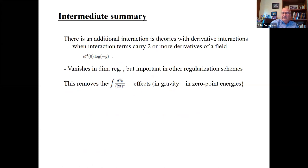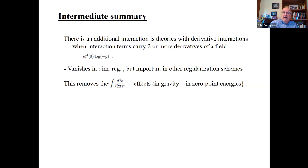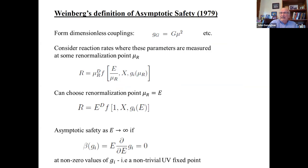Here's my summary of this first part: this new interaction cancels off the effects of this particular scaleless integral. It vanishes in dimensional regularization, but if you're doing anything else you need to know about this. The place where people actually do use cutoffs — and I'll argue are doing something wrong — is in asymptotic safety. Let me spend about 15 minutes talking about asymptotic safety. I'm not an advocate; I'm trying to understand what is going on when they do what they do.